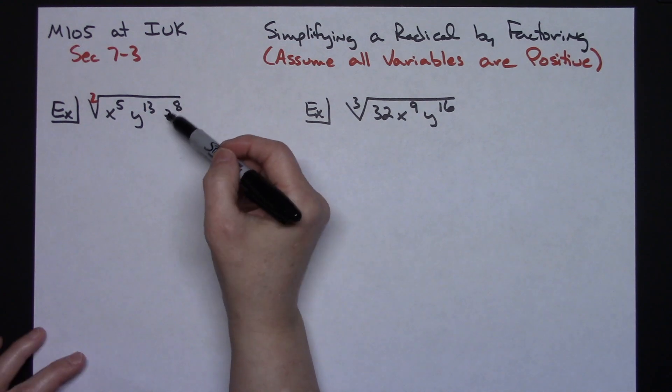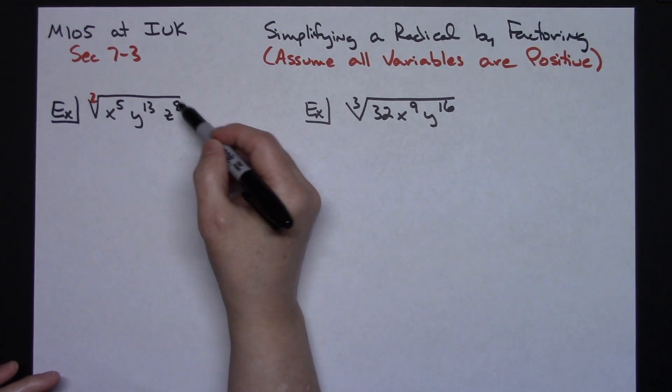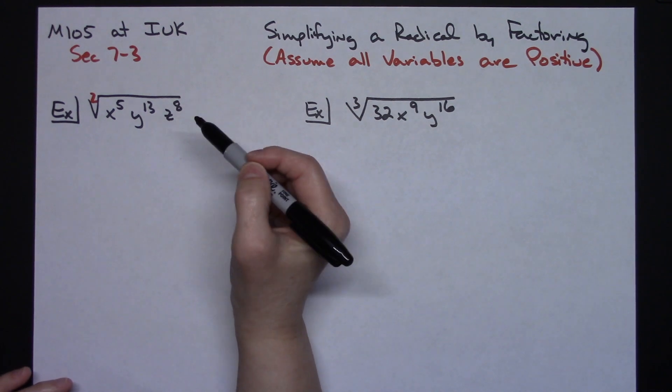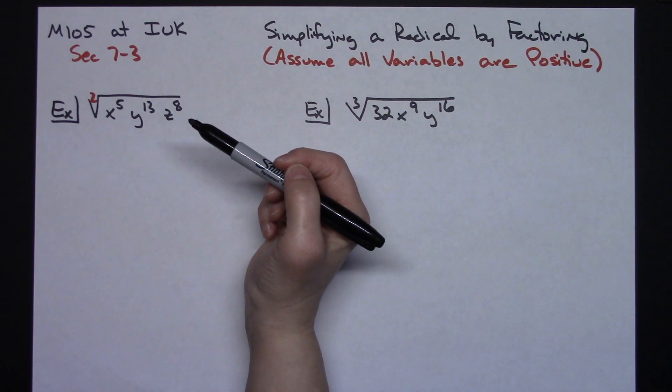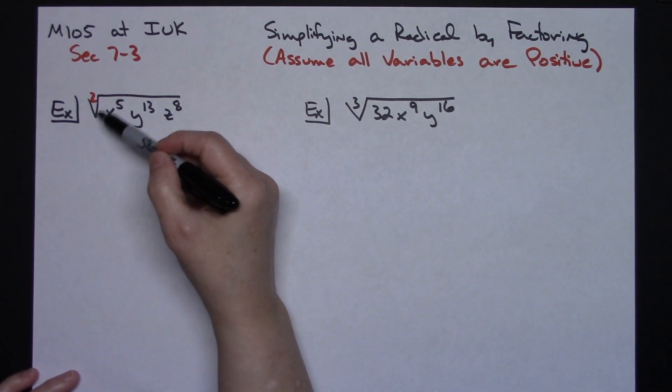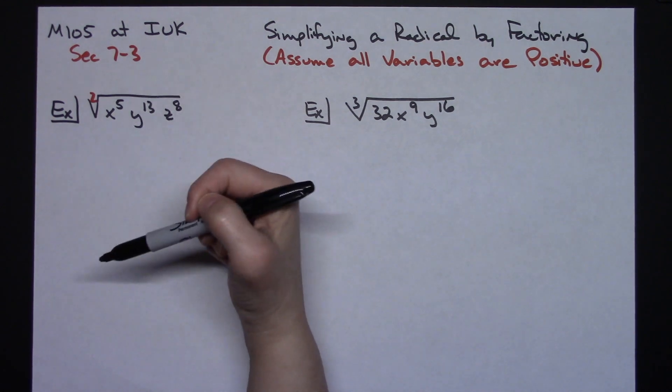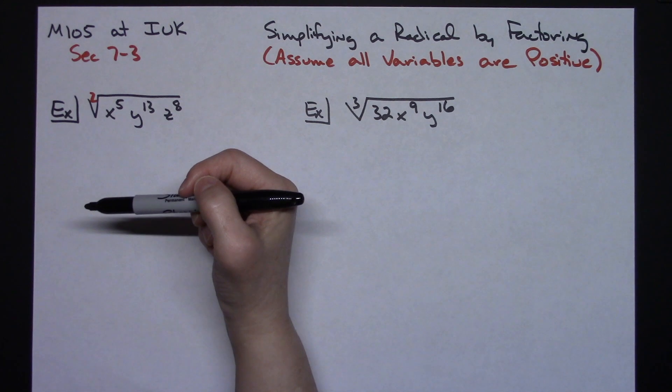If I can on any one of those like this z to the 8th, 8 divided by 2, then I know this is a perfect square root. Now the problem is this and this is not a perfect square root. So I'm going to break it up by factoring. I need to break this up into x to some power times x to some power and force a perfect square root.